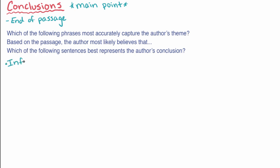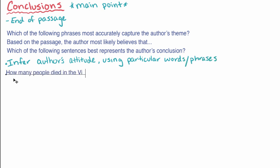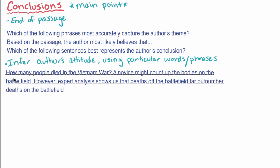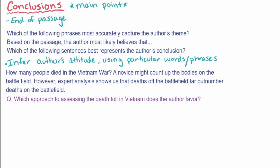Some questions will ask you to infer the author's attitude or perspective on a topic by considering their particular words or phrases. For example, if an author writes, how many people died in the Vietnam War? A novice might count up the bodies on the battlefield. However, expert analysis shows us that deaths off the battlefield far outnumber deaths on the battlefield. A question about this example might ask, which approach to assessing the death toll at Vietnam does the author favor? The author uses the word novice and expert to suggest that the expert way is better.